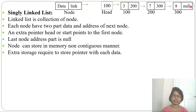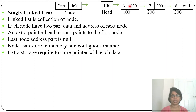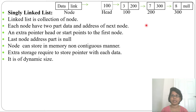Extra storage is required for the pointer. Suppose integer size is 4 bytes — so data is 4 bytes, but the pointer (address part) also stores 4 bytes, meaning each node requires 8 bytes total. Every node needs double the data size due to the pointer. The linked list is of dynamic size, meaning you don't need to specify the length initially — it can be increased dynamically and you can insert any number of nodes.